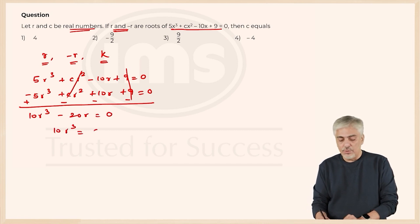10r³ = 20r. r cannot be 0. So, I can cut r on both sides, so 10r² equals, and cut the 0 also, so r² = 2.